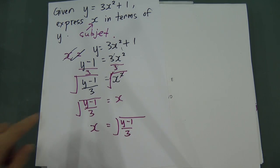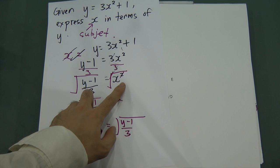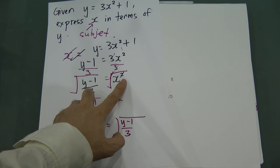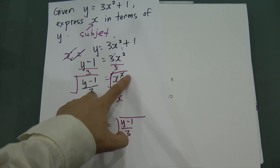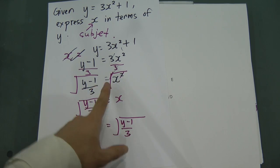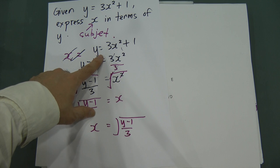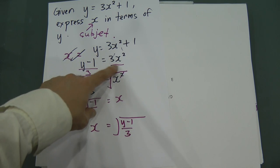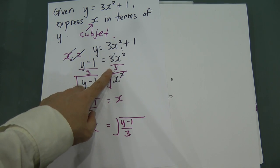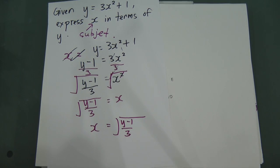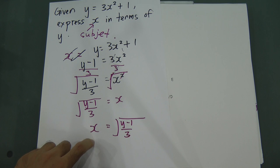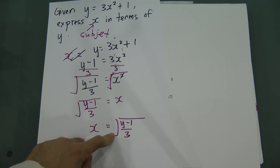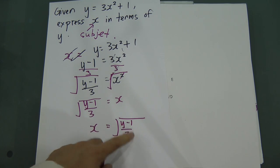So you have to know: if you want to remove the square, you have to add a square root. If you want to remove the 3, you have to divide by 3. That is the meaning of expressing x in terms of y.